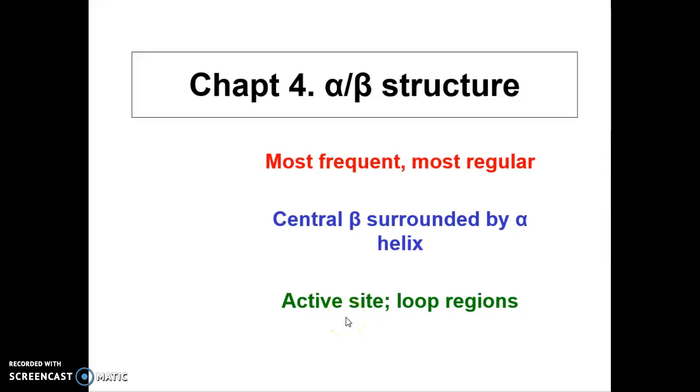In this chapter, we're going to learn about alpha-beta protein structure. This category has the most frequent and most regular proteins. They have beta-pleated sheets at the center surrounded by alpha helices. Active sites are positioned on loop regions, not beta nor alpha.